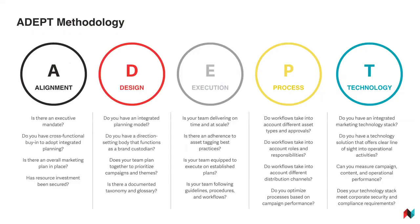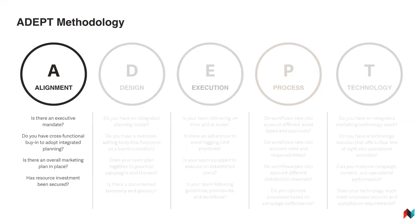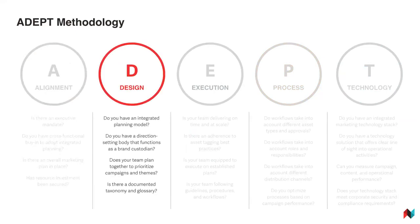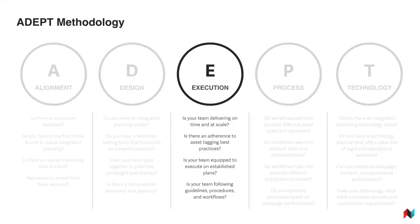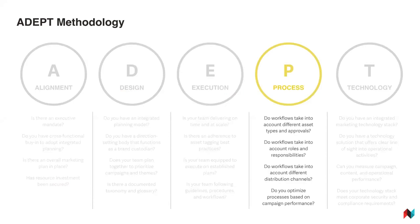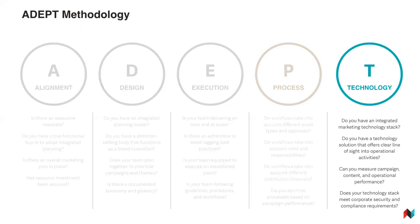At this point I want to introduce you to our ADEPT methodology — something we developed to walk businesses through exactly where they need to focus their attention in order to build out a successful integrated marketing organisation. ADEPT stands for Alignment, Design, Execution, Process, and Technology. Alignment is all about internal factors — making sure your teams are all bought into becoming an integrated operation and that there's a central leadership team or task force dedicated to kicking things off. Design is about ensuring you have the logistical setup in place, using a collaborative planning model that really breaks down the silos that exist in the business. Execution is all about how well the team is equipped to implement that vision. Process is where you develop those prescriptive steps that make up the execution. And it's Technology that I want to spend a little more time talking about today.